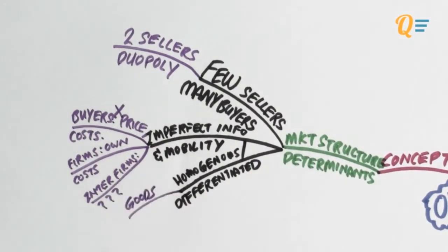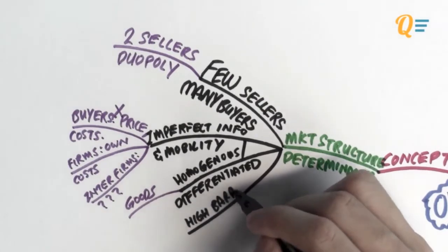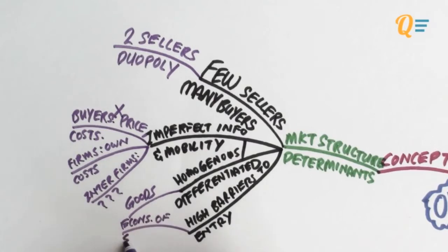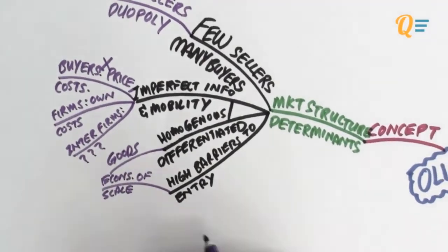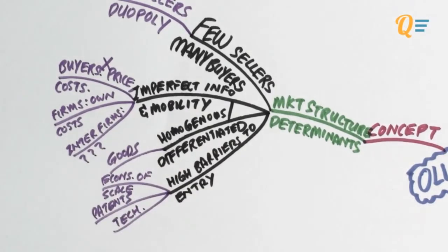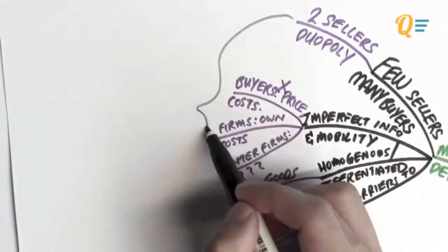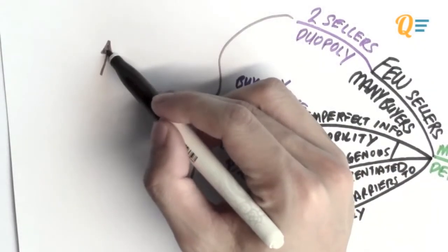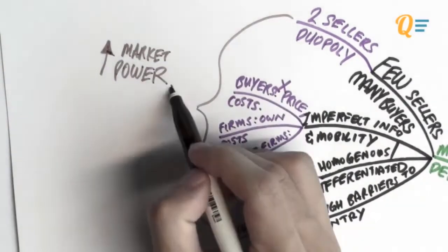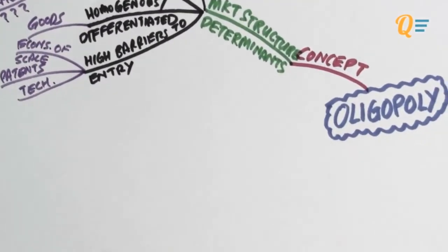The market also has a homogeneous or a differentiated good. It doesn't really matter. But what matters is that it has got high barriers to entry to keep it at only two firms. So high barriers to entry could be a result of these two firms having very big economies of scale. Either they've got patents or they're very advanced in a technology that nobody can copy, and that's why they can't enter the market. With these four determinants, we can see that the oligopoly market or the duopoly actually has got very high market power and it can control the price to a certain extent.